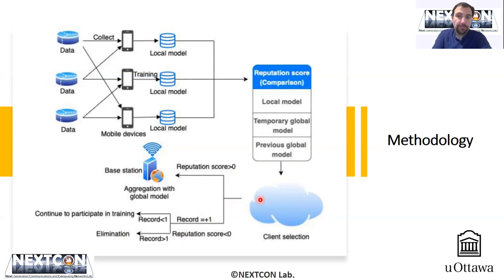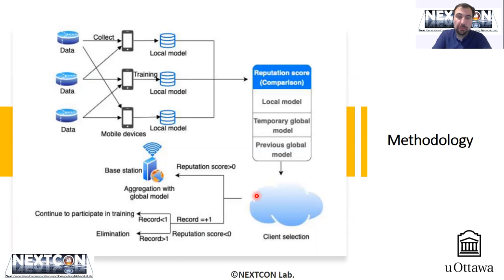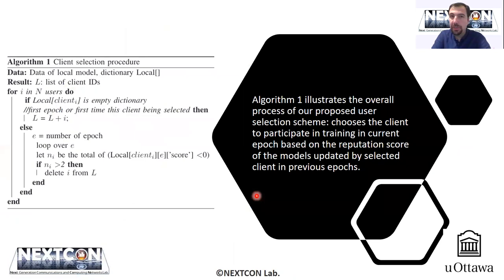When the number of consecutive negative reputations exceeds a certain threshold, the participant is eliminated from the pool. That is how this scheme is proposed. The baseline is a non-reputation-aware approach, and I will be showing you the performance comparison of the proposed reputation-aware scheme to the baseline, where there is no reputation but participants contribute their local models to the global aggregation model.